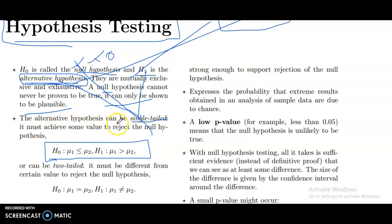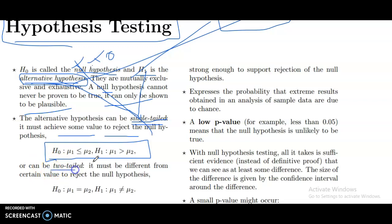The alternative hypothesis can be single-tailed — it must achieve some value to reject the null hypothesis — or it can be two-tailed. For a two-tailed test, the result must differ from a certain value to reject the null hypothesis. For example: H0: mu1 ≤ mu2, H1: mu1 > mu2 for single-tailed; H0: mu1 = mu2, H1: mu1 ≠ mu2 for two-tailed.